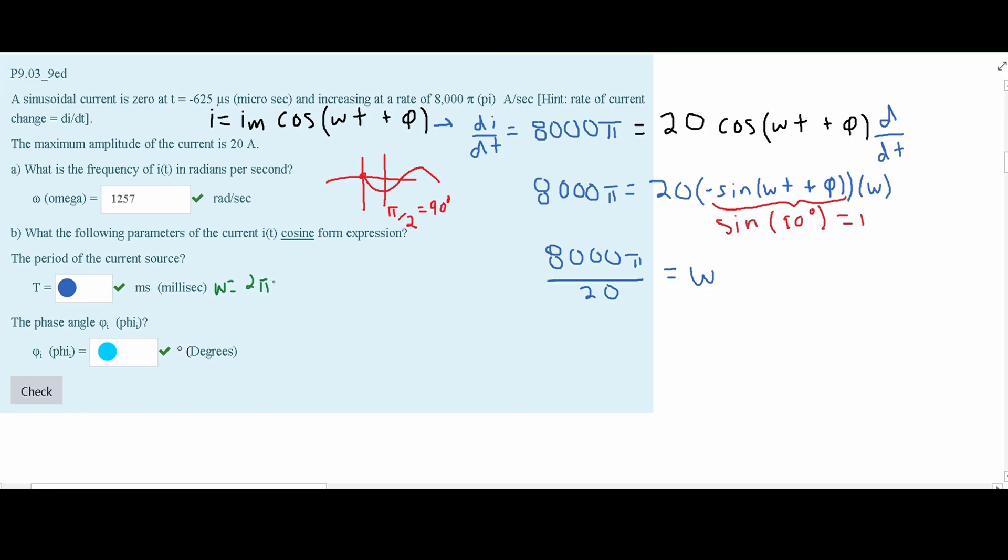So we can replace our frequency with a 1 over t. So now we can find t. We'll multiply both sides by t and divide both sides by omega. And that will give us a t is equal to 2 pi divided by our omega. And if we do this, we are going to get that our t is equal to approximately 0.005 seconds.